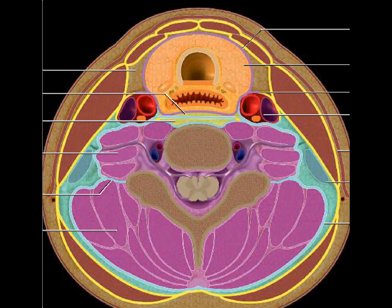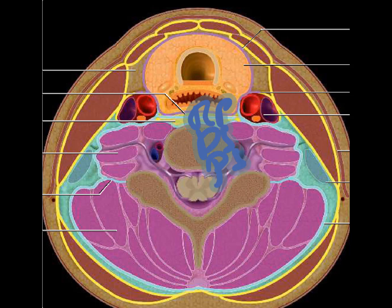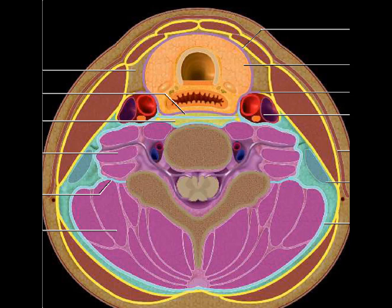Deeper to the deep layer of the deep cervical fascia is the pre-vertebral space, which extends all the way into the thorax. The retropharyngeal space, the danger space, and the pre-vertebral space all three extend even into the suprahyoid region. The carotid space is formed by all three components — superficial, middle, and deep — of the deep cervical fascia.